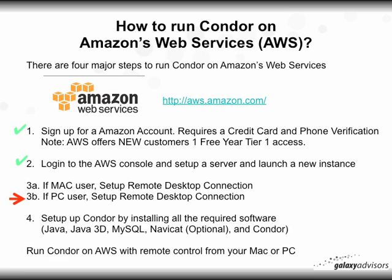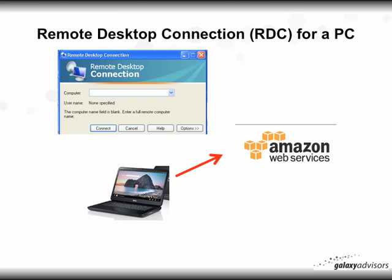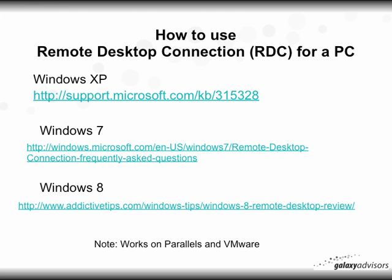After this step, our fourth and final step will be setting up Condor by installing all the required software, and then you'll be able to run Condor on Amazon Web Services with remote control on your Mac or PC. Conceptually, remote desktop connection for a PC is an application that allows you to use your PC to remotely connect to Amazon Web Services and control that server.